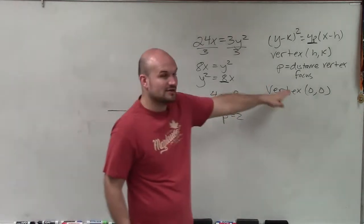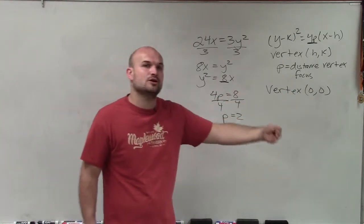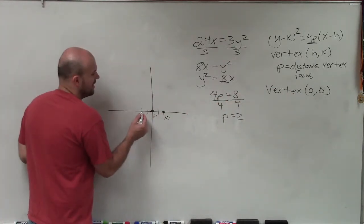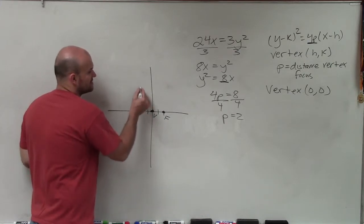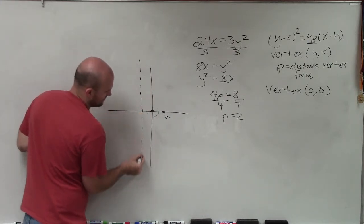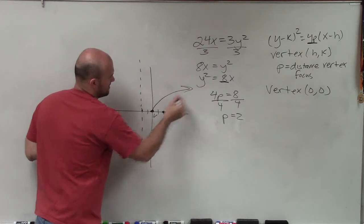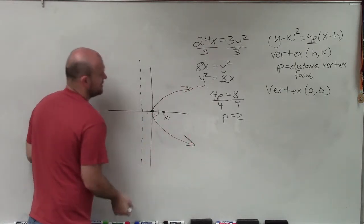Now, to determine the directrix, I'm going to use the same value p but go in the opposite direction, which would be negative 2. Remember, the directrix is going to be a line. Then I'm just going to estimate the path of my parabola.